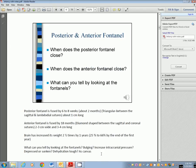You need to know this, alert. When does the posterior fontanelle close? If you said by six to eight weeks or about two months, you are correct. This is the triangular one that's between the sagittal and the lambdoidal sutures. The anterior fontanelle fuses by 18 months. It's a lot larger, your diamond shape between the sagittal and coronal sutures, about two to three centimeters wide and three to four centimeters long. The brain has increased its weight two and a half times in that first year, going from 25% at birth to 66% by the end of the first year.